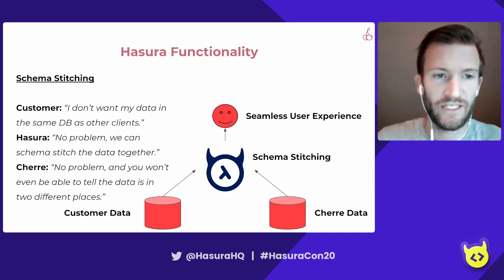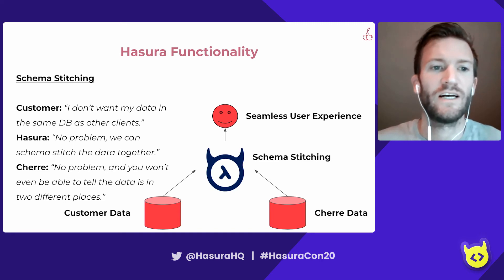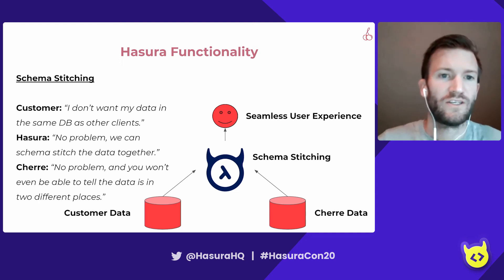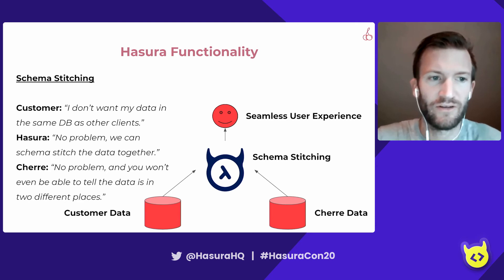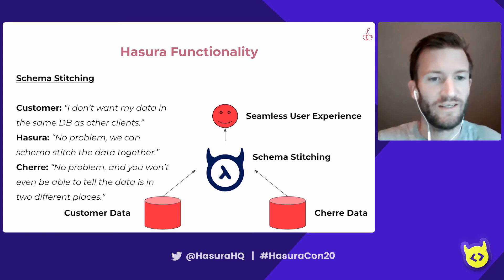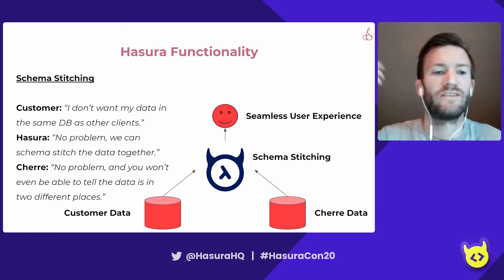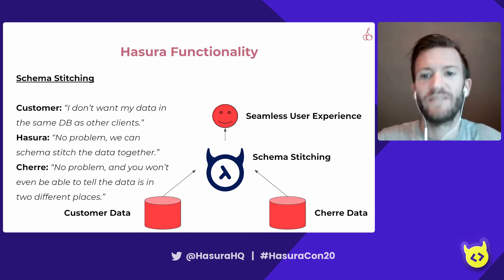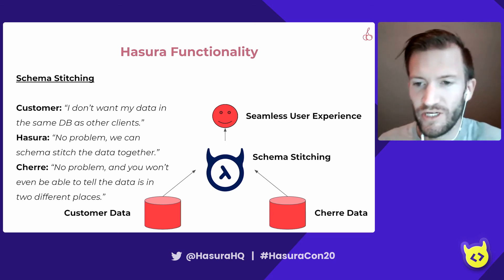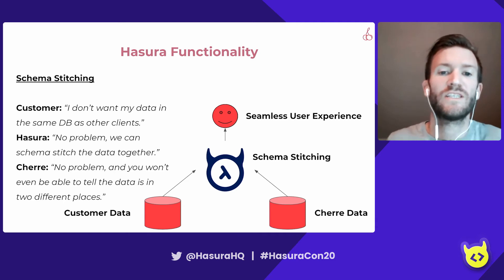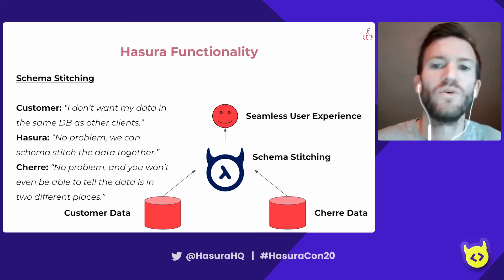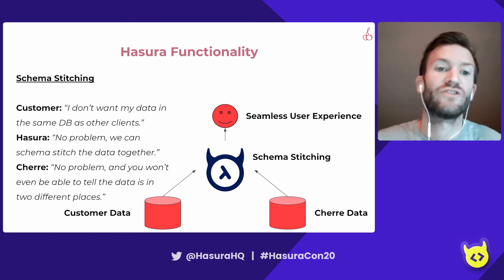When it comes to schema stitching, since we're connecting customer-specific data, the security around data is really important to our clients. A customer will say, 'I don't want my data in the same database as other clients.' The great response from Azure is: no problem, we can help you schema stitch data together. And what Cherry gets to tell the customer is: no problem, you're going to have a seamless user experience. We will have your data in one database and all of the other Cherry data in another database, and schema stitch that together — so regardless of what database everything is coming from, you will have a seamless user experience as you're using our API.